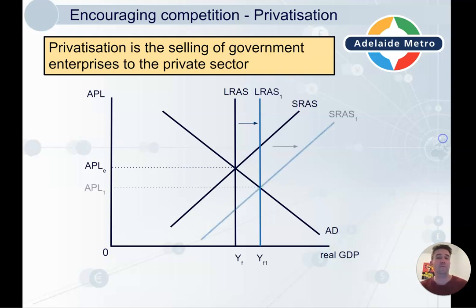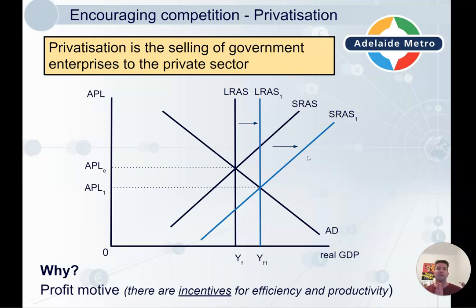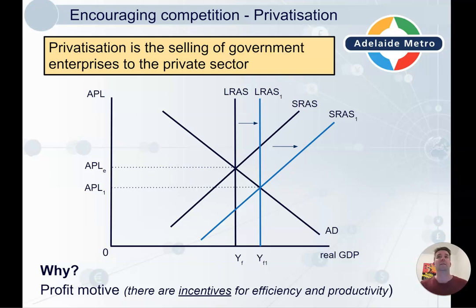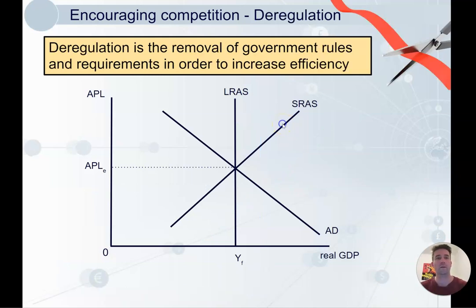This shifts LRAS. The reason being that a private company has a higher profit motive — they're incentivized to make as much profit as possible. They will make more profit if they are more efficient and more productive, whereas the government doesn't have that same incentive and is therefore less likely to be efficient. Moving to the private sector means more efficiency and more productivity — that is the thinking.